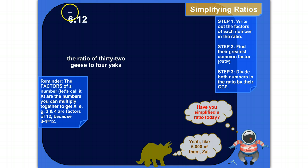Again, a ratio is just a comparison between two numbers. So, for example, 6 to 12, or if written out in English, the ratio of 32 geese to 4 yaks.